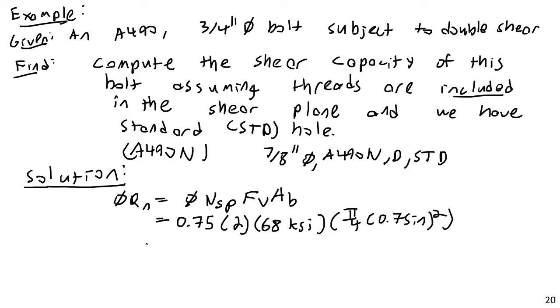And if I did my math correctly, phiRN will come to 45.0 kips per bolt.